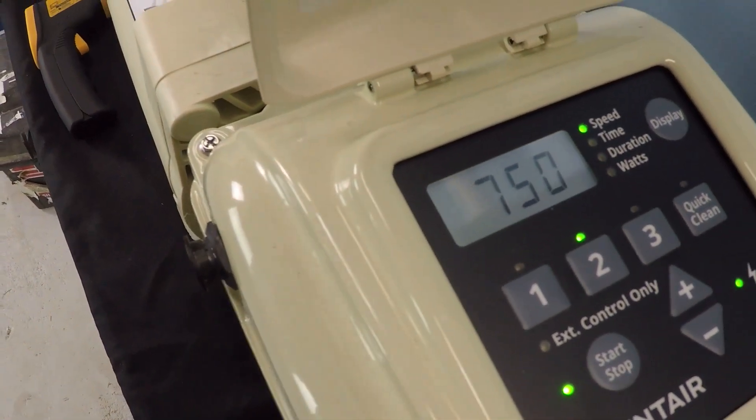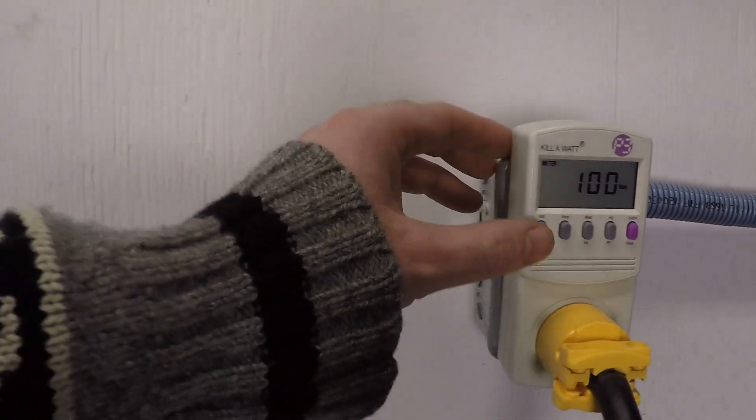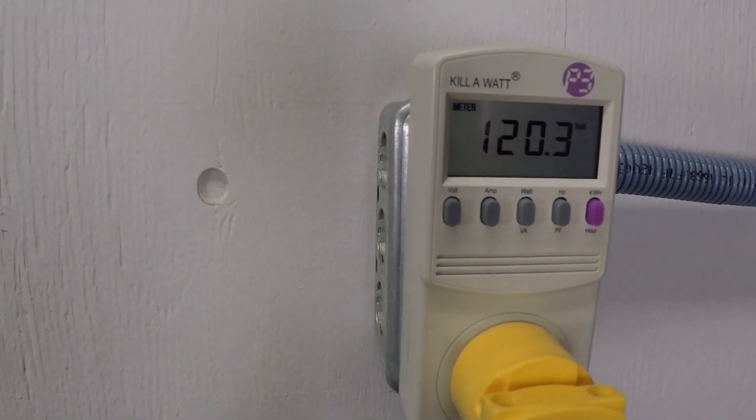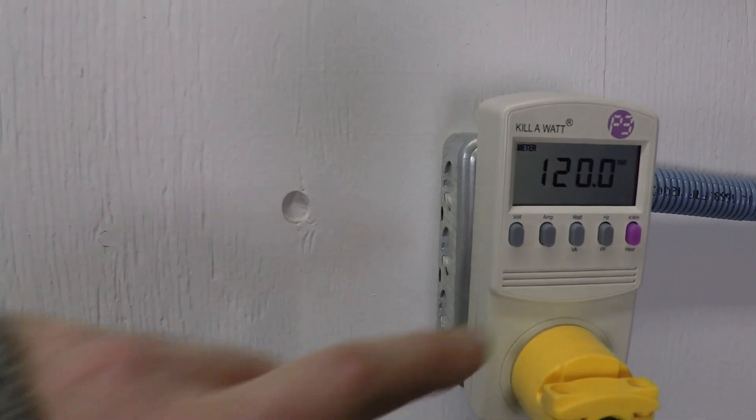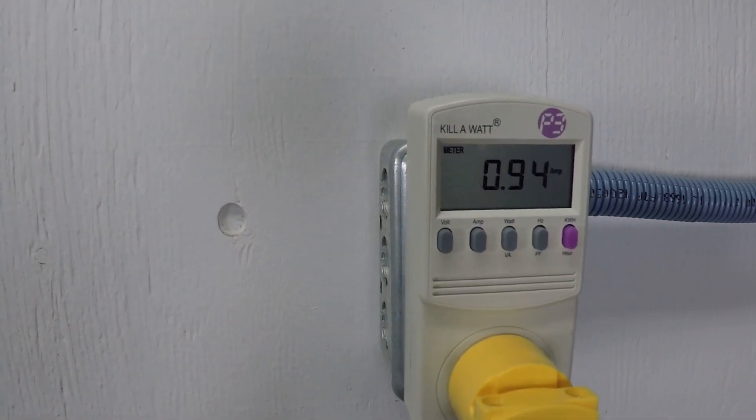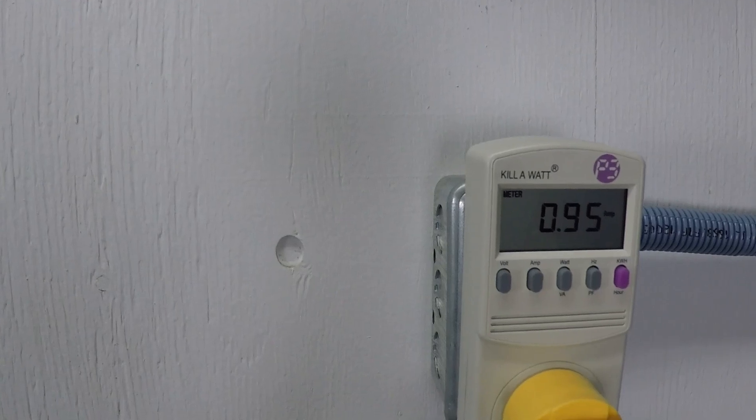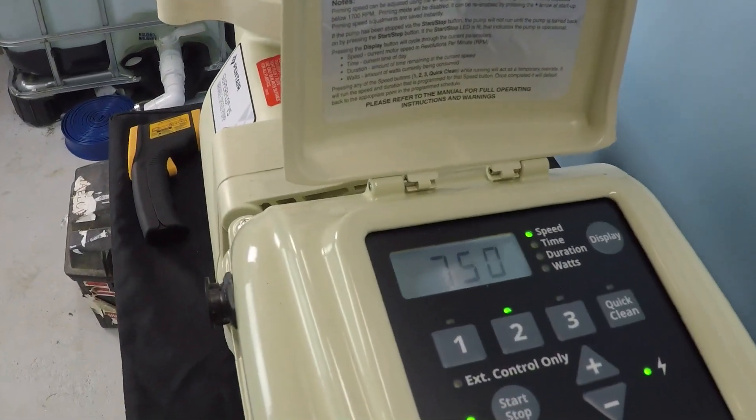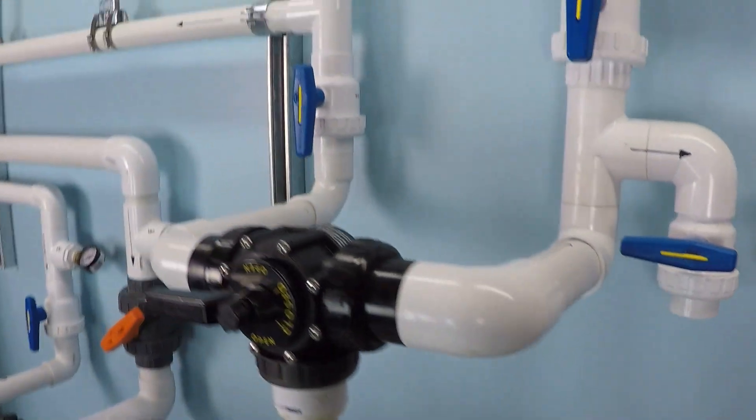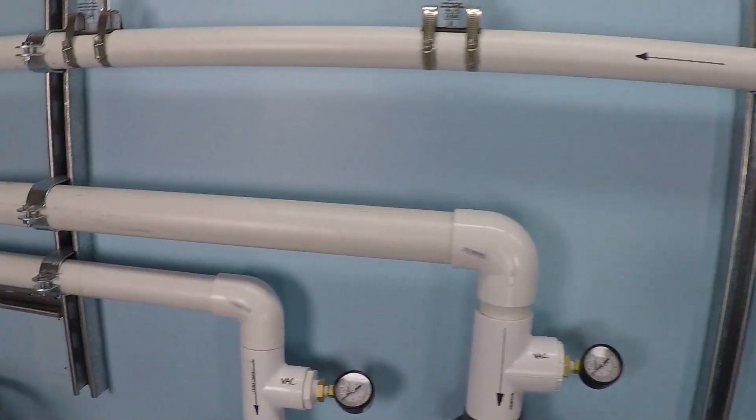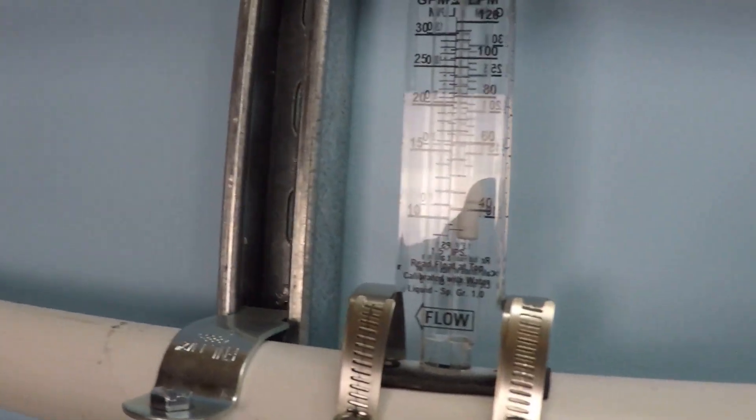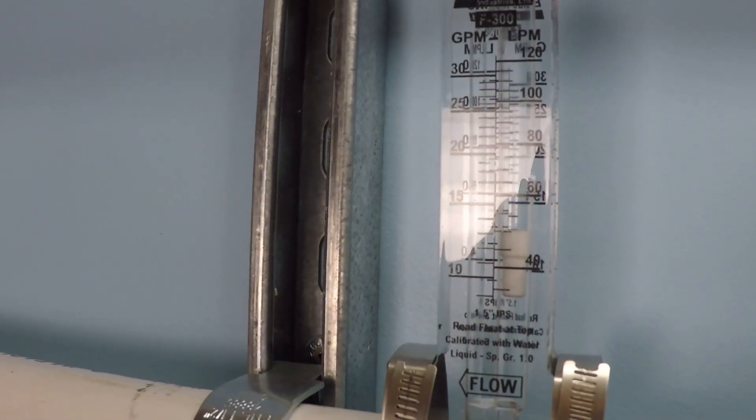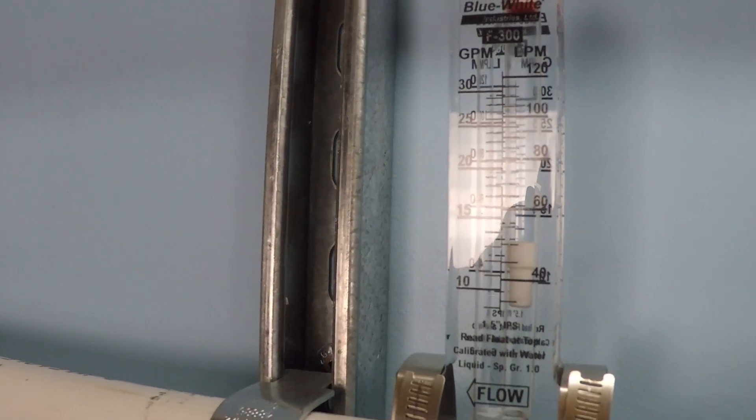We're currently at 750 RPM. This pump is installed with 120 volts as the electrical supply and is drawing 0.95 amps with this current operating condition of 750 RPM. Let's take a look here. Our low range flow meter we can see is just over 13 gallons per minute.